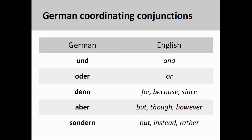The conjunctions you see on the screen are those most frequently covered in introductory German courses. 'Und' is equivalent to the English 'and.' 'Oder' means 'or.' 'Denn' means 'for,' 'because,' or 'since.' 'Aber' means 'but,' 'though,' or 'however.' And 'sondern' means 'but,' 'instead,' or 'rather.' The difference between 'aber' and 'sondern' will be covered in more detail at the end of this presentation.